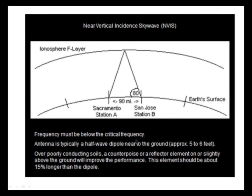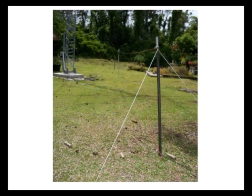You have to be below the critical frequency; otherwise the signal will keep going right out through the ionosphere. The antenna is typically a half-wave dipole near the ground. Over poorly conducting soils, a counterpoise reflector element on or slightly above the ground will improve the performance, and that should be about 15 percent longer than the dipole.